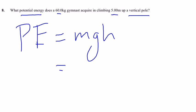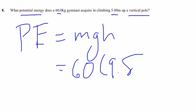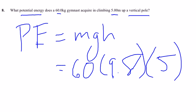So M is 60, G is 9.8, and height is 5. So 60 times 9.8 times 5. Multiply it out and get your answer.